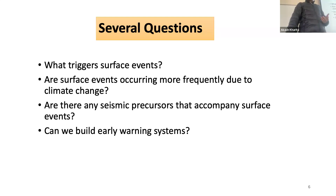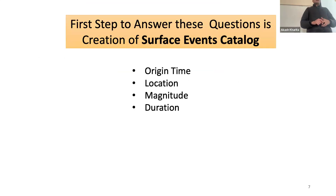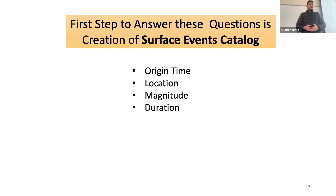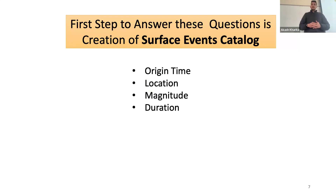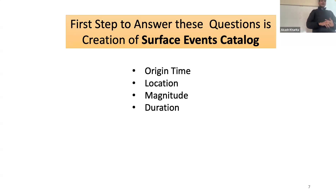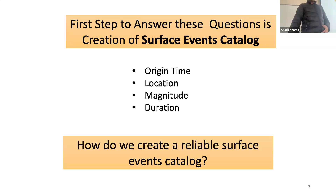The reason we have much better answers for earthquakes is because we have a very well-defined catalog for earthquakes compared to surface event catalogs. The one way to answer all these questions is to develop a reliable surface event catalog, which should at least contain origin time, location, magnitude, and duration.